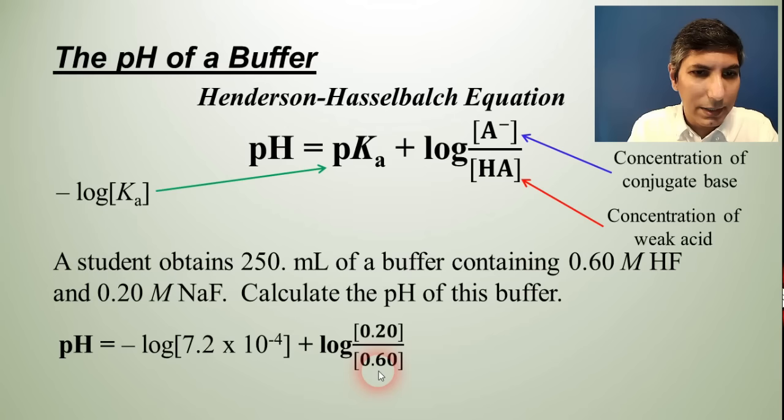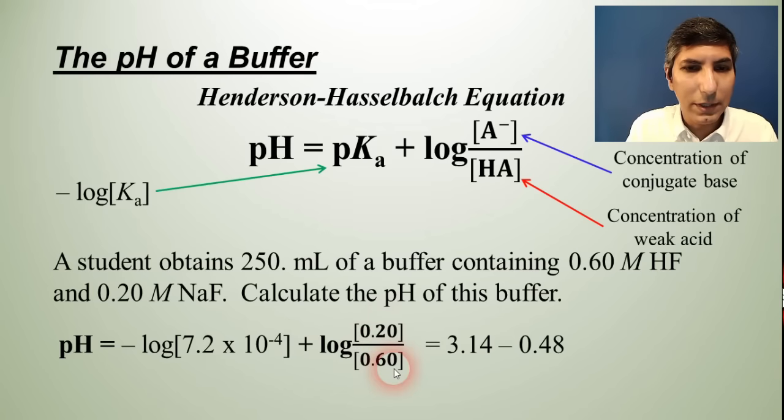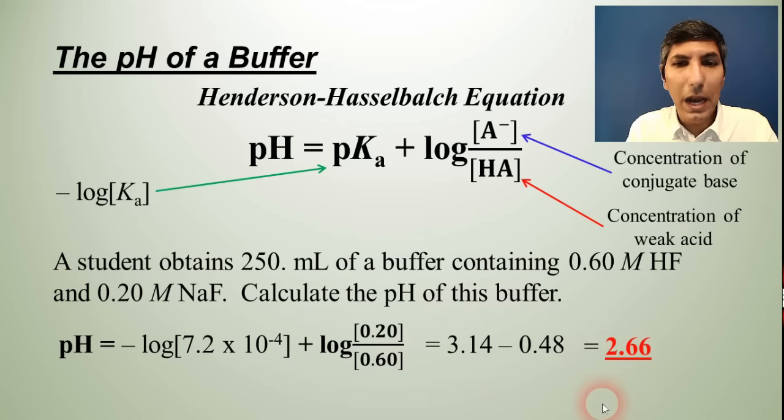So now all we have to do is determine what this is equal to on our calculator. So the first term is 3.14. The log of 0.2 over 0.6 is negative 0.48. So when you compute this, you'll find that the pH of the buffer is 2.66. So it's a fairly straightforward problem. If you're pretty good with your scientific calculator and are able to work with the logarithm button, then you shouldn't have any problem solving these problems.